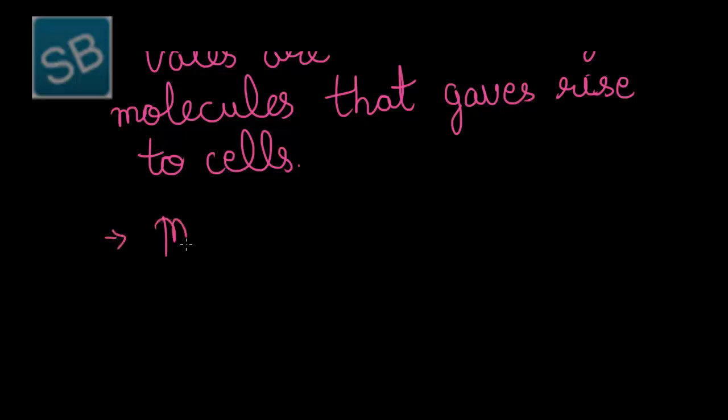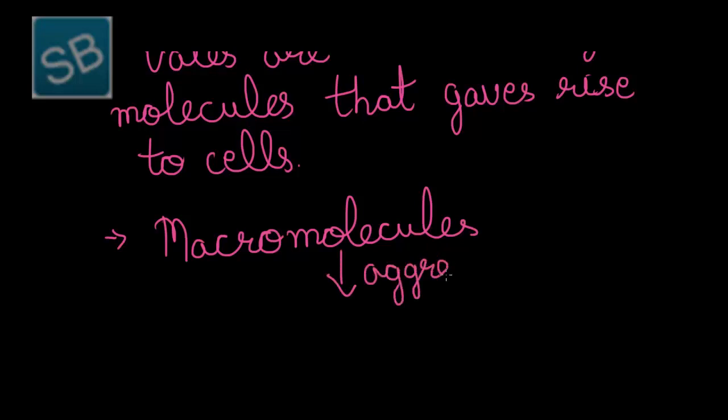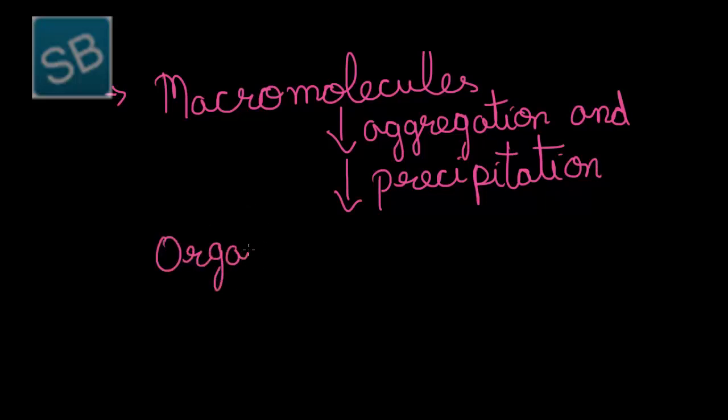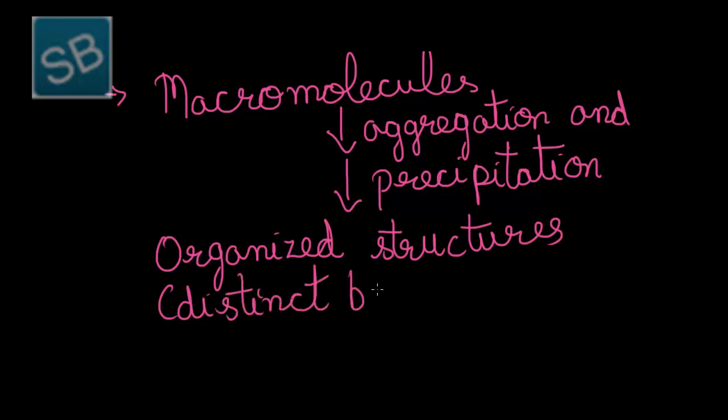Till now, we have studied that macromolecules were formed. Now, these macromolecules, when they underwent aggregation and precipitation processes, gave rise to organized structures that appeared as distinct bodies. That is, they did not get mixed with the sea water, which were called coacervates.